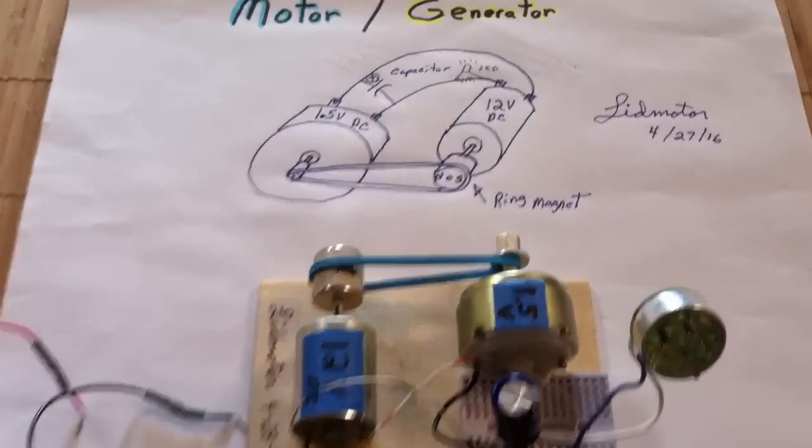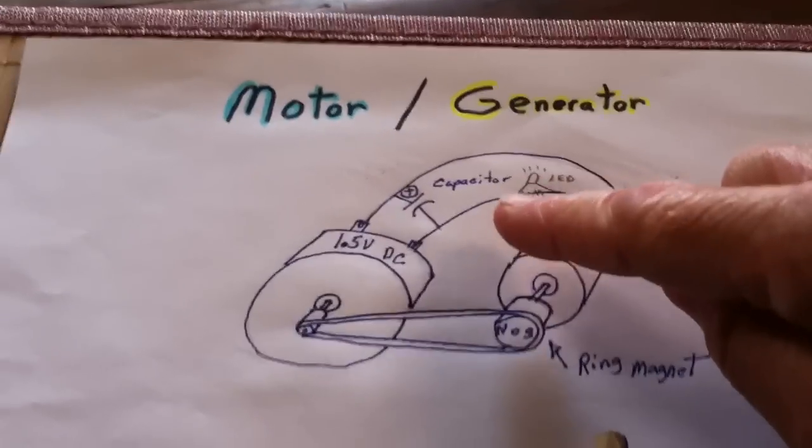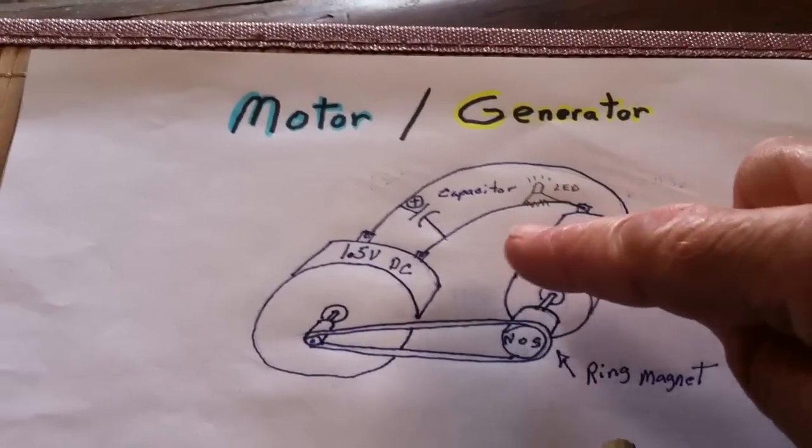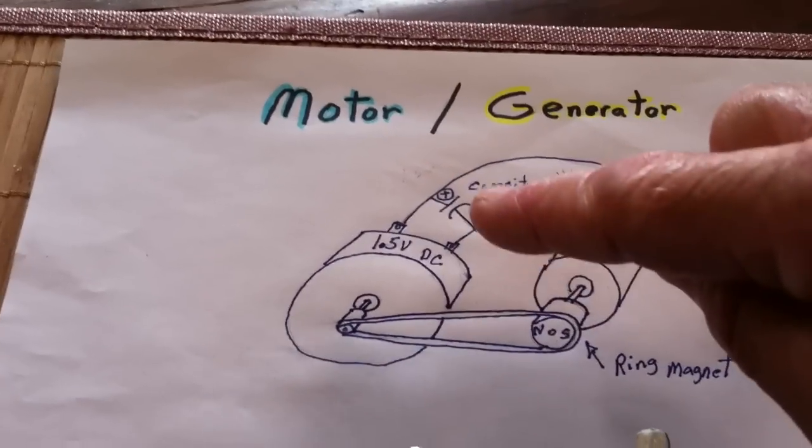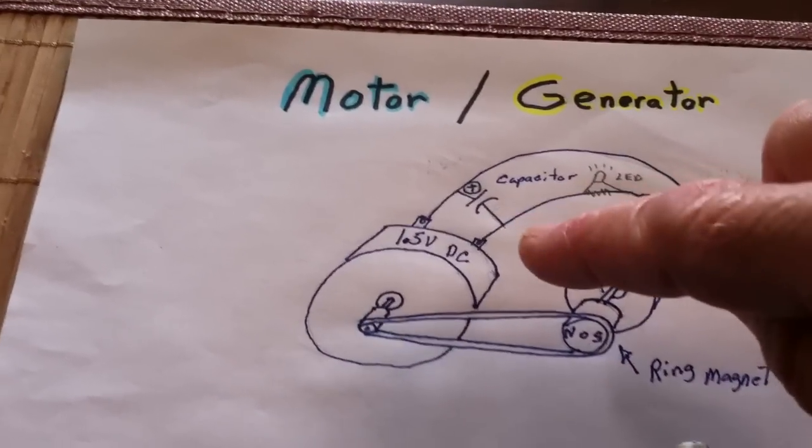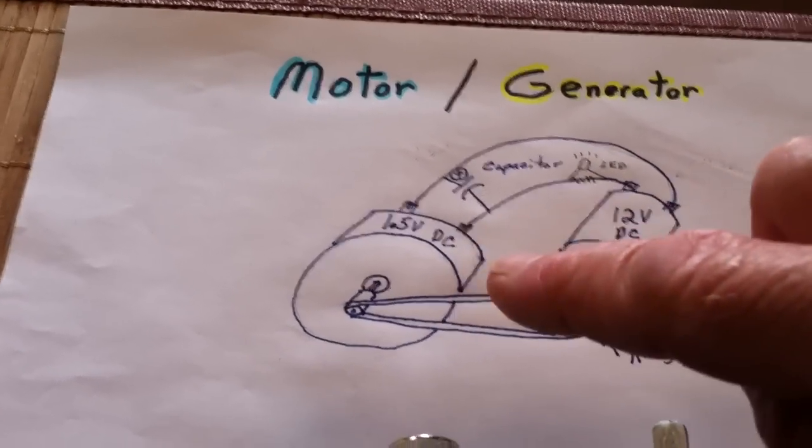Here's this motor generator. I've added an LED, actually nine LEDs in parallel, right there on the generator. I'm using a 6 farad 2.7 volt super cap today and I'm going to be loading it up with